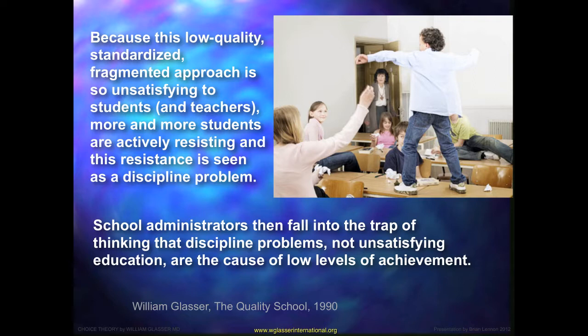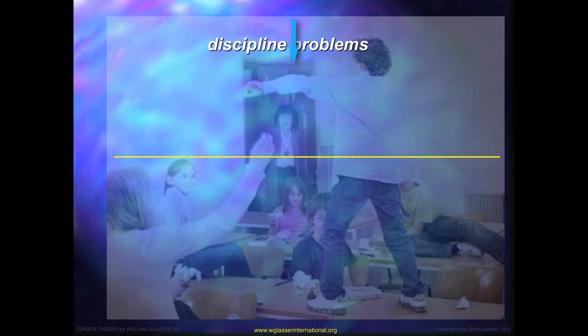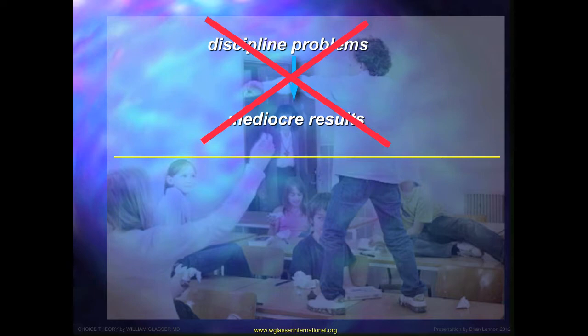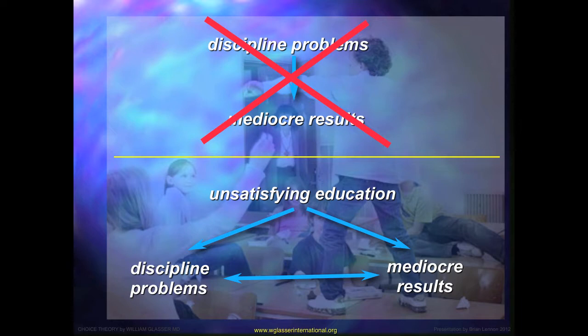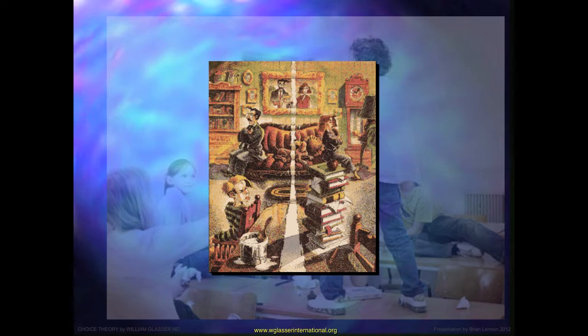This is a significant quote from Glasser's The Quality School (1990): people think discipline problems cause mediocre results, and that solving discipline problems would improve results. Glasser says no — it is unsatisfying education that gives rise to discipline problems, and also to mediocre results, and both interact with each other. To change this situation, we need to change unsatisfying education. Glasser compares this to divorce: when a couple divorces, one takes the other out of their quality world — they are no longer a need-satisfying entity. Sadly, this also happens in education, where the student takes education, teachers, and learning out of their quality world, and therefore invests no behaviour in the educational process.